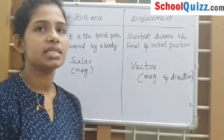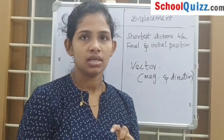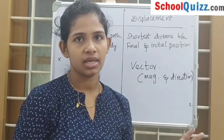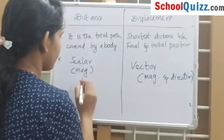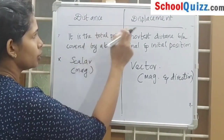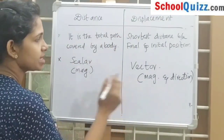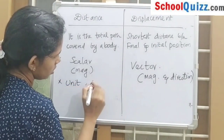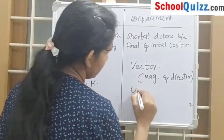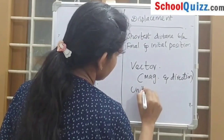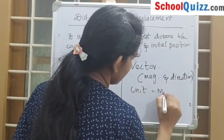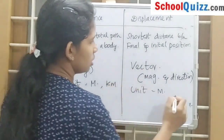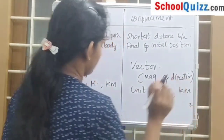Distance and displacement are measured in meters, kilometers, or centimeters. The unit of distance and displacement is meters or kilometers.